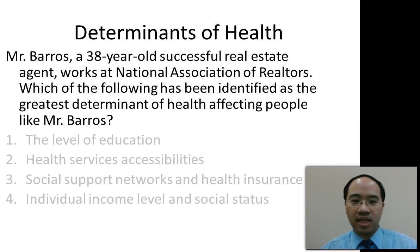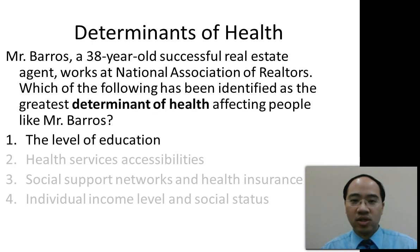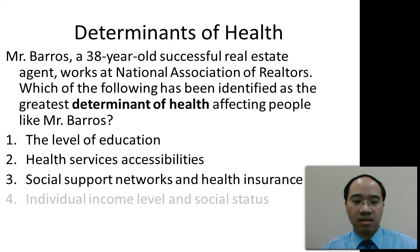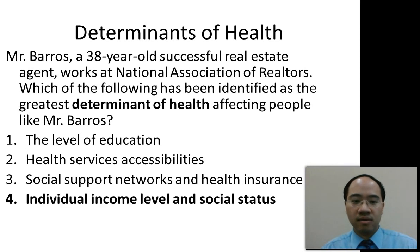Here's a typical type of question dealing with determinants of health. Mr. Barros, a 38-year-old successful real estate agent, works at the National Association of Realtors. Which of the following has been identified as the greatest determinant of health affecting people like Mr. Barros? 1. The level of education. 2. Health services accessibility. 3. Social support networks and health insurance. 4. Individual income and social status. The answer is 4 — individual income level and social status.